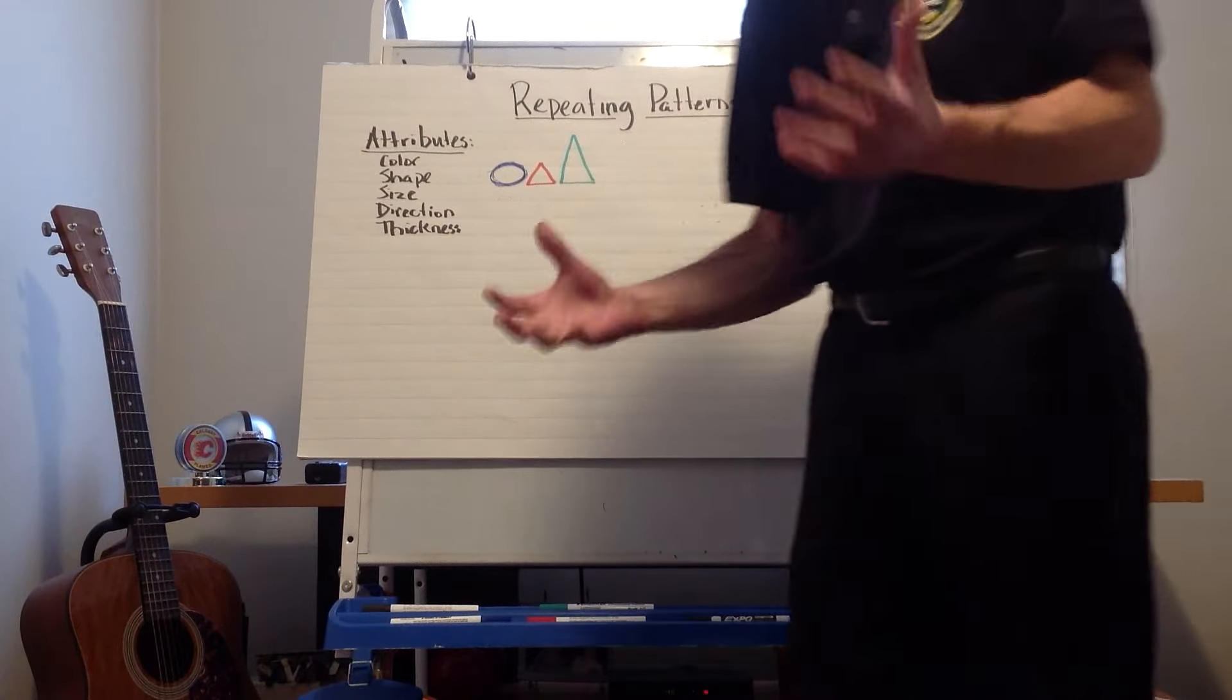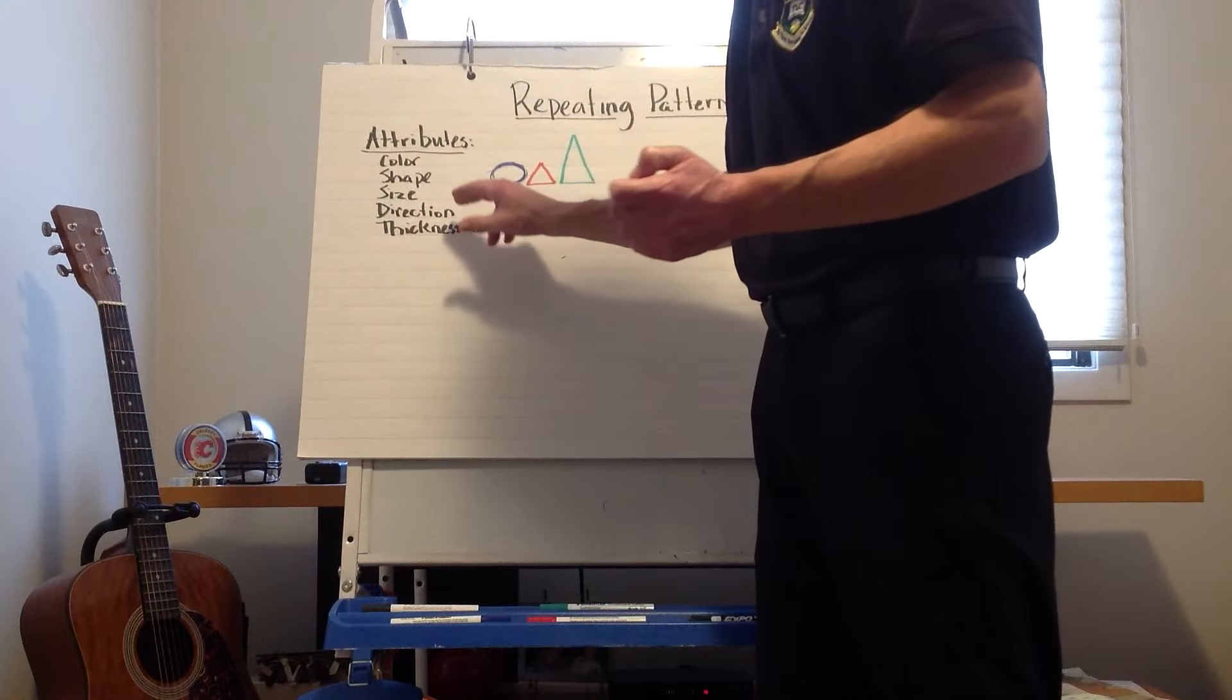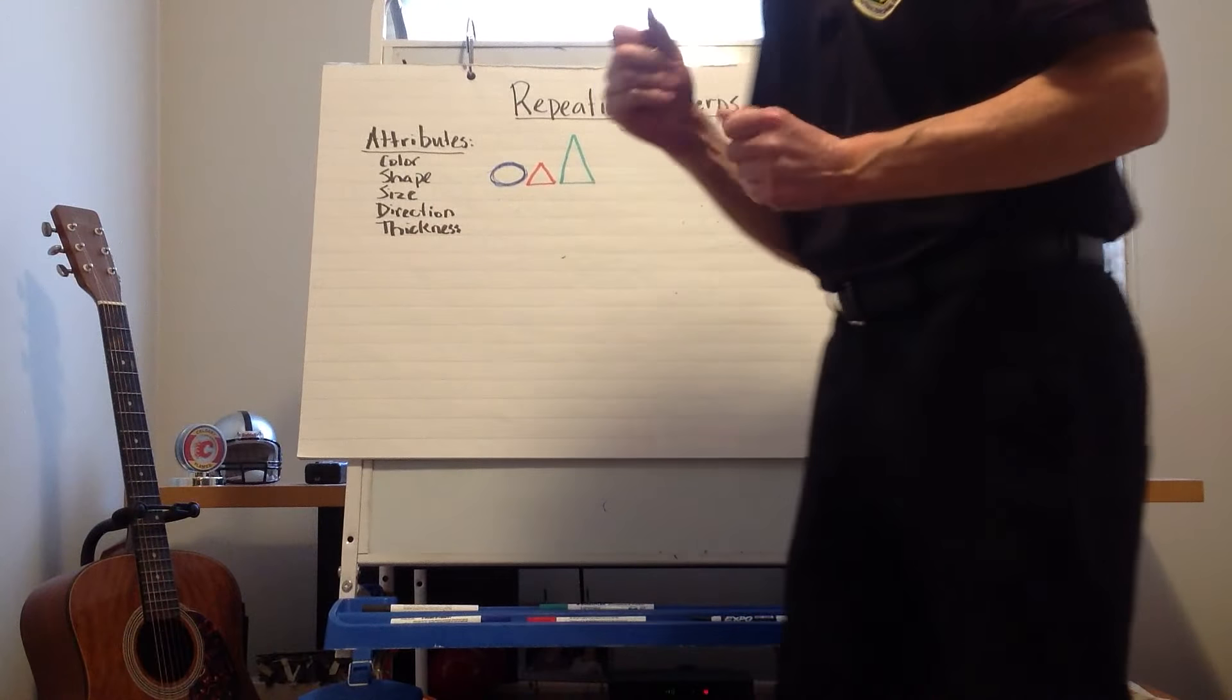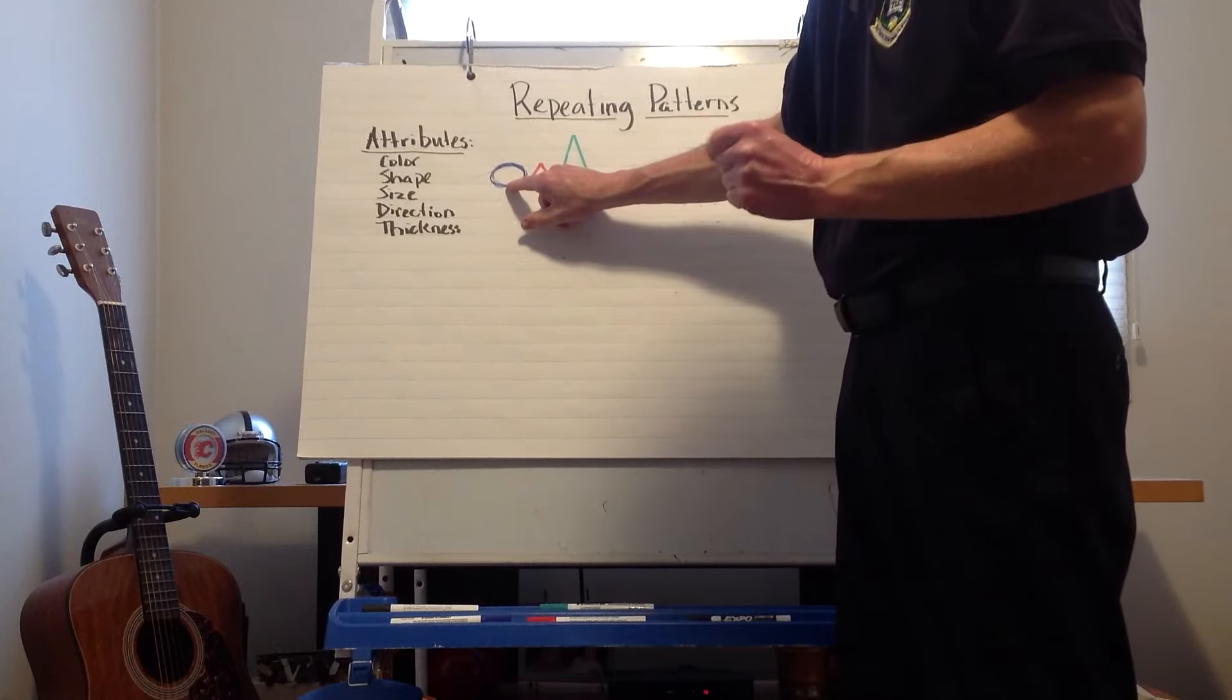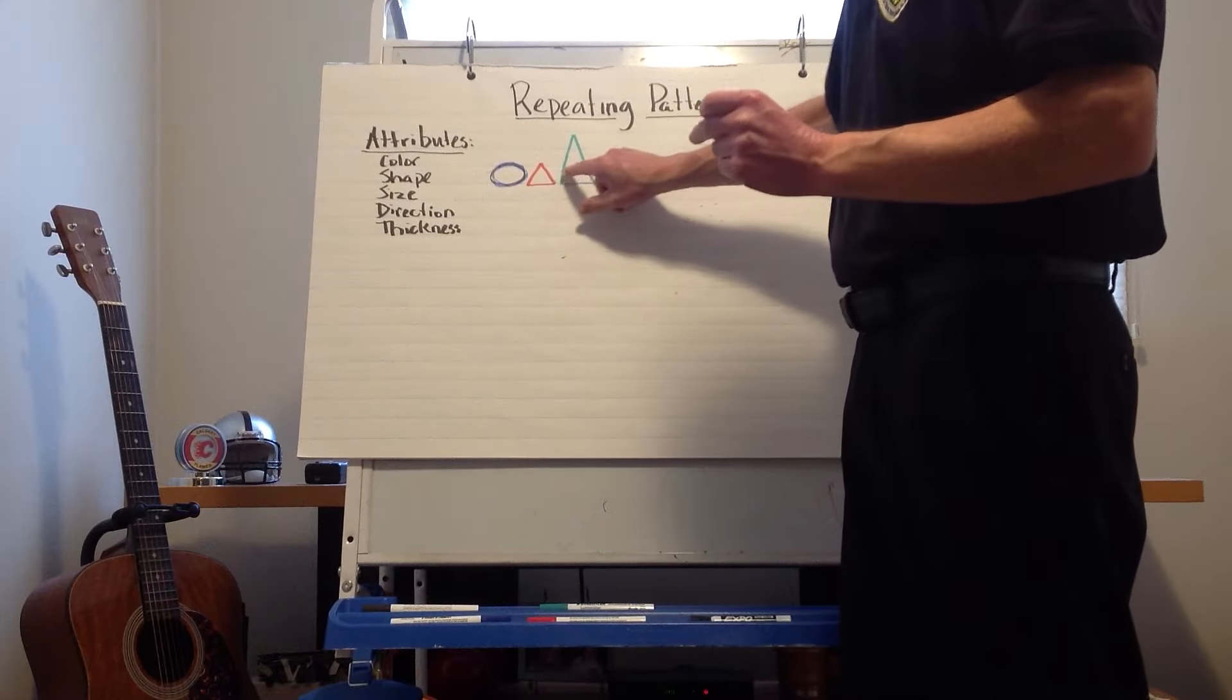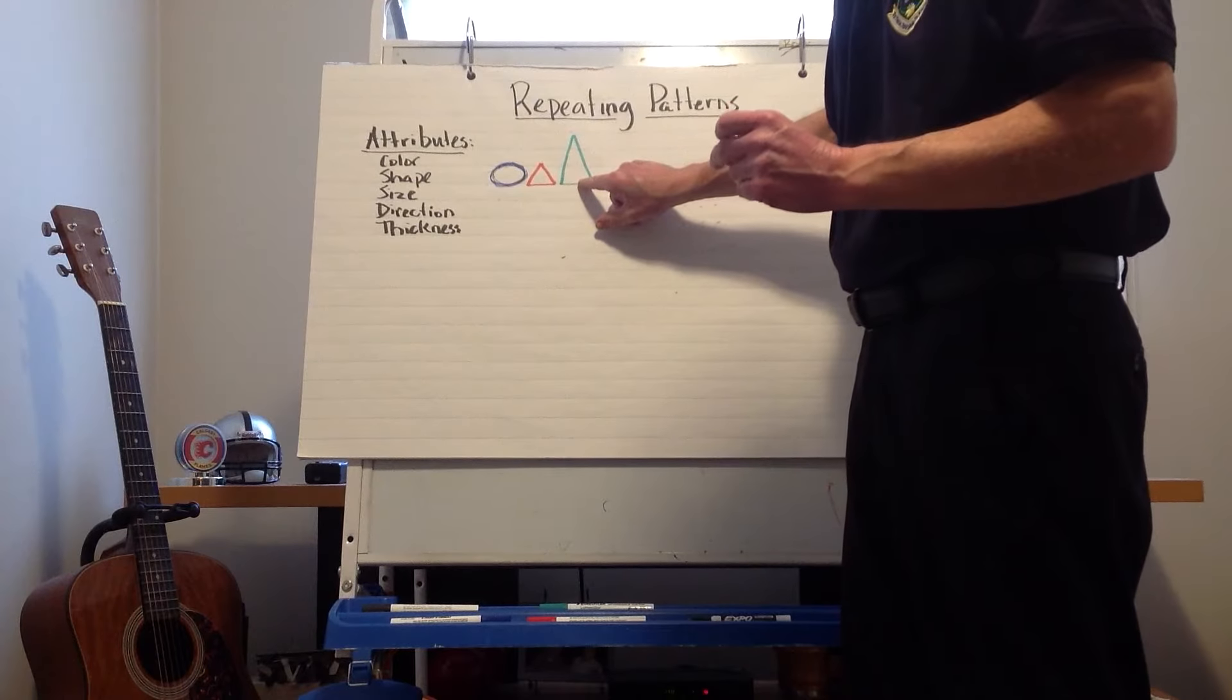So I want to show you how we can use direction in a repeating pattern. In this case I have a pattern started here. I've got a blue circle, red triangle, and then a large green triangle.